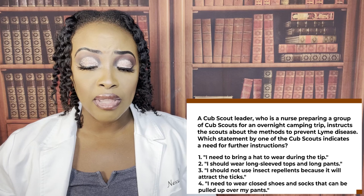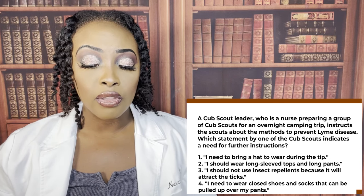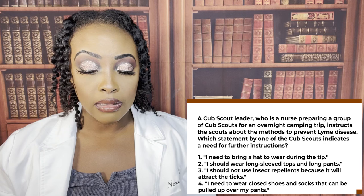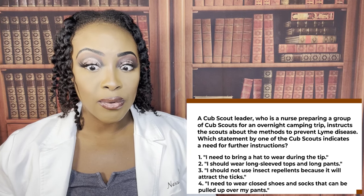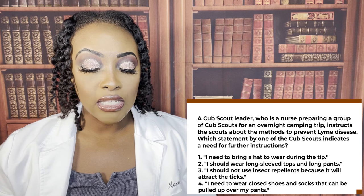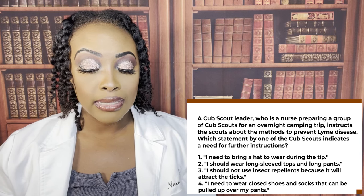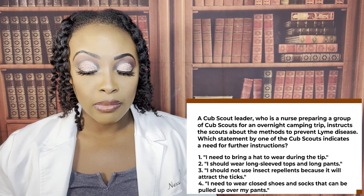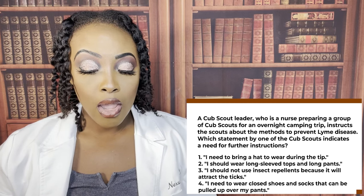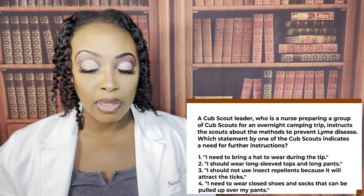A cub scout leader who is a nurse prepares a group of scouts for an overnight camping trip and instructs them about methods to prevent Lyme disease. Which statement by one of the scouts indicates a need for further instruction? One, I need to bring a hat to wear. Two, I should wear long-sleeved tops and long pants. Three, I should not use insect repellents because it will attract the ticks. Or four, I need to wear closed-toed shoes and socks that can be pulled over my pants.